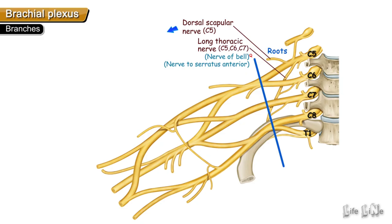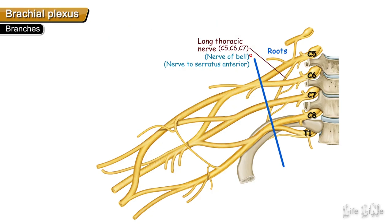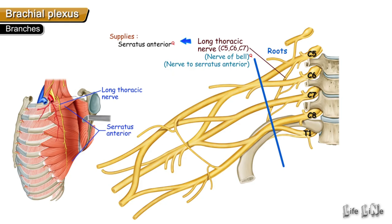The dorsal scapular nerve from the C5 root supplies the muscles attached to the dorsal side of the medial border of the scapula — namely levator scapulae, rhomboid major, and rhomboid minor. The long thoracic nerve, also called the nerve to serratus anterior, comes from roots C5, C6, and C7 and supplies the serratus anterior muscle.